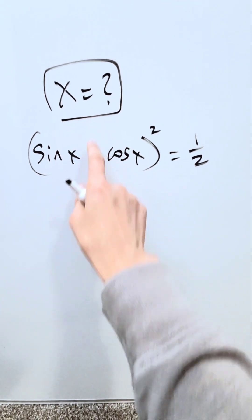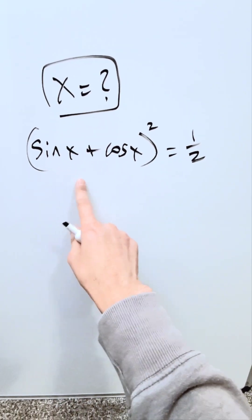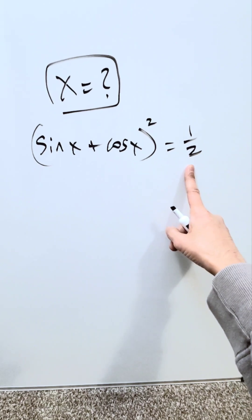I have to find the possible values or solutions of x such that sine x plus cosine x whole square is equal to 1 over 2.